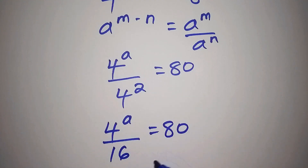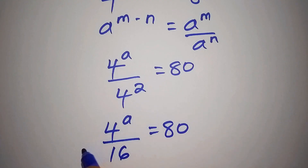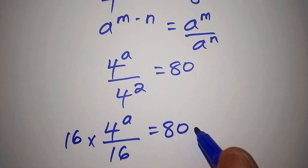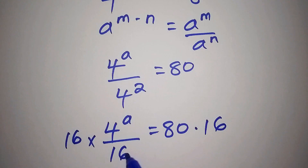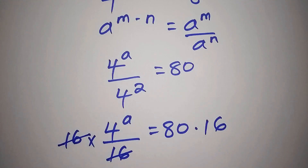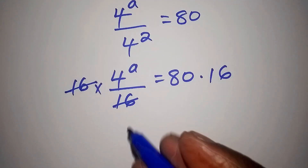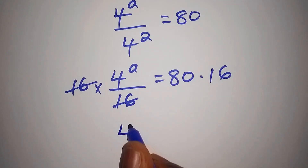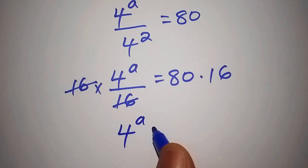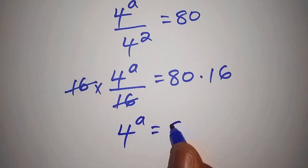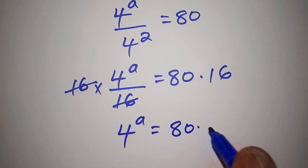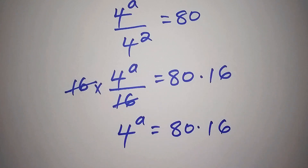We shall now have 4 to the power of a all over 4 to the power of 2, which is 16, equals 80. To remain with 4 to the power of a, multiply both sides by 16. So 16 over 16 cancels out, and we shall now have 4 to the power of a equals 80 multiplied by 16.